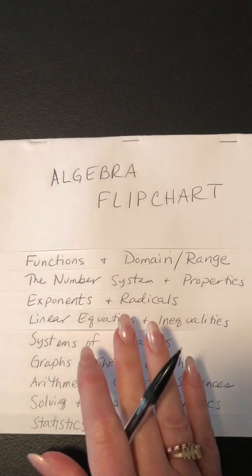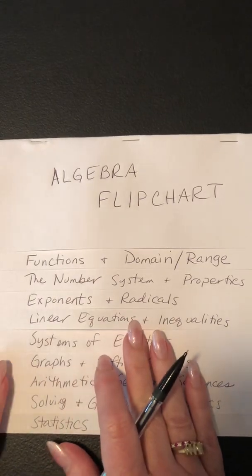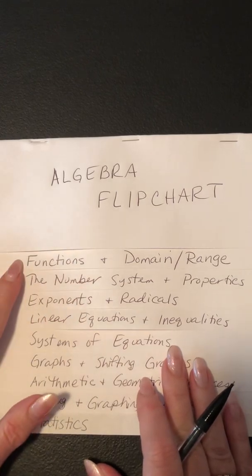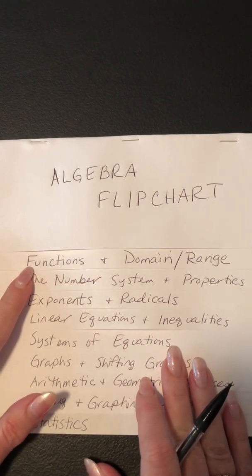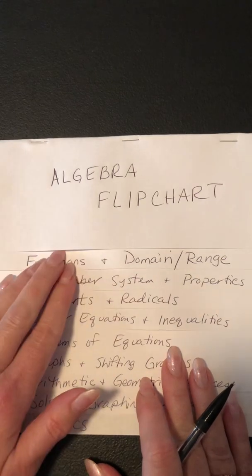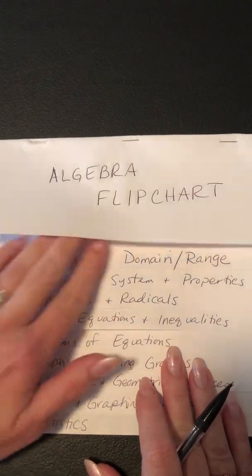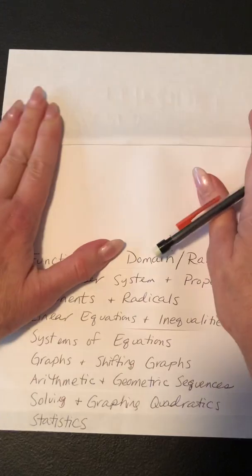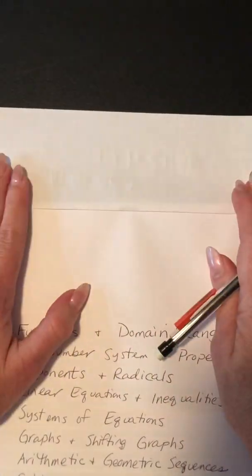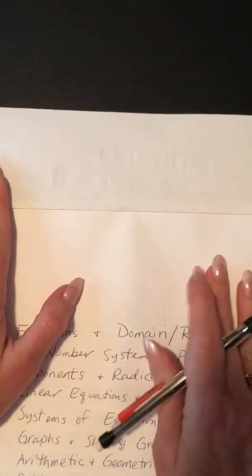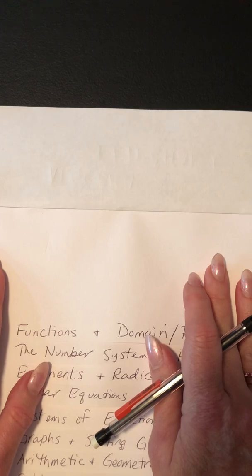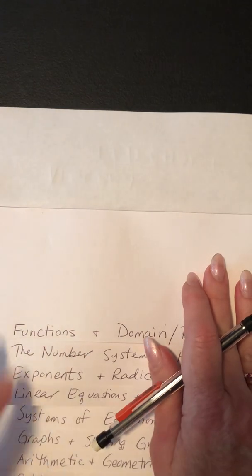In this video we're going to start doing the flip chart and we're going to do the first tab. The first tab is functions and domain and range. We're going to open up and go to the first tab and start filling it out.